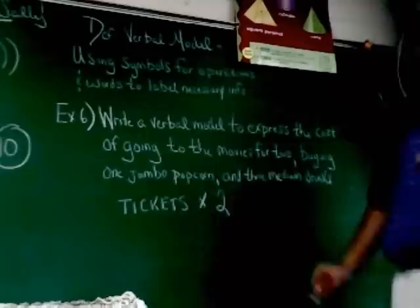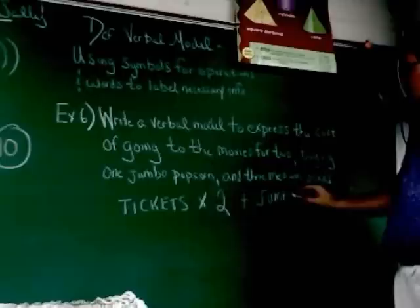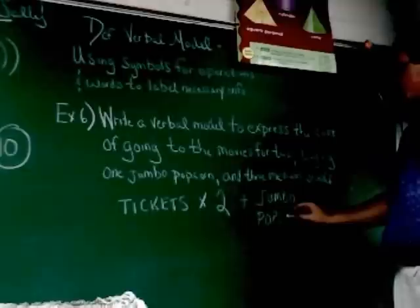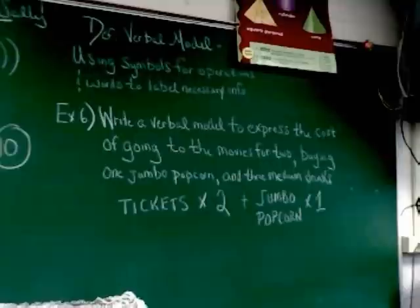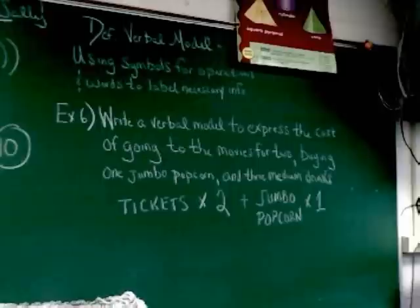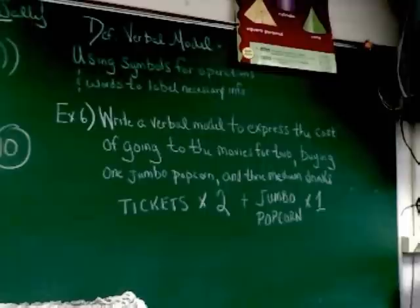Then, in a verbal model, you just keep adding on the extra parts. So, the next thing we run across is buying one jumbo popcorn. So, I write jumbo popcorn. And I'm multiplying jumbo popcorn by what in this problem? One. Okay. I've only bought one, so I only need to multiply by one. Now, you're probably, some of you are probably asking yourself, why do I need to multiply by one? When you write a verbal model, you want to write it so that if I change the numbers, that's the only thing you have to do is change the numbers. You don't have to go back in and add in times numbers now. That's the way you write a verbal model.